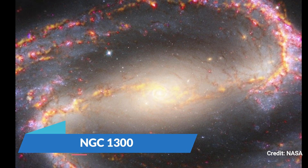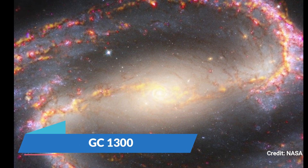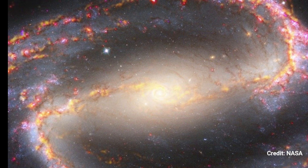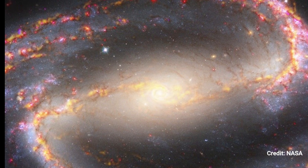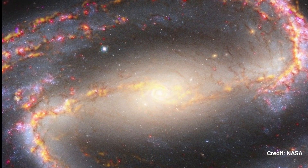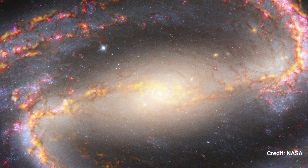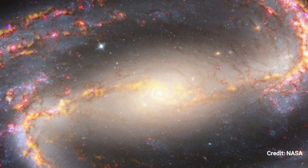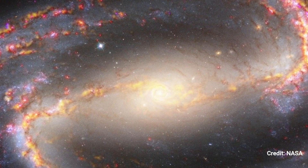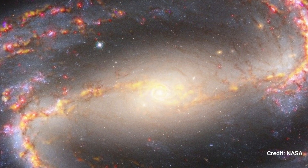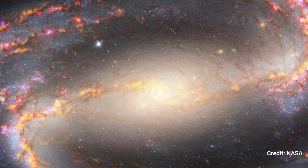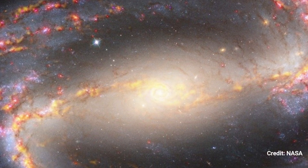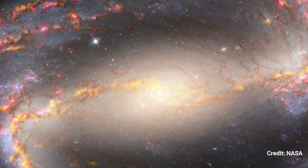NGC-1300: the Hubble Space Telescope's Advanced Camera for Surveys, the Atacama Large Millimeter/Submillimeter Array, and the Very Large Telescope's Multi-Unit Spectroscopic Explorer instruments produce this composite image of NGC-1300, which includes compass arrows and labels for reference. The north and east compass arrows indicate the image's orientation in the sky.